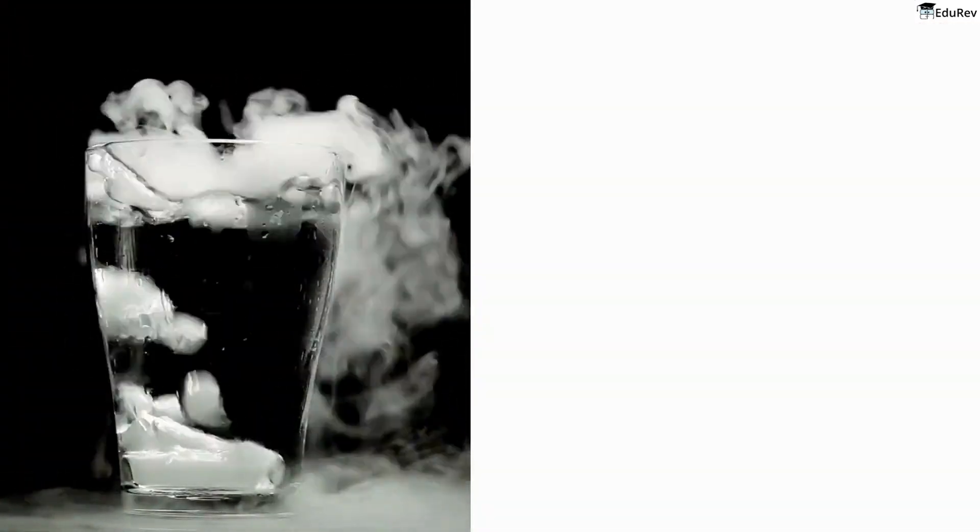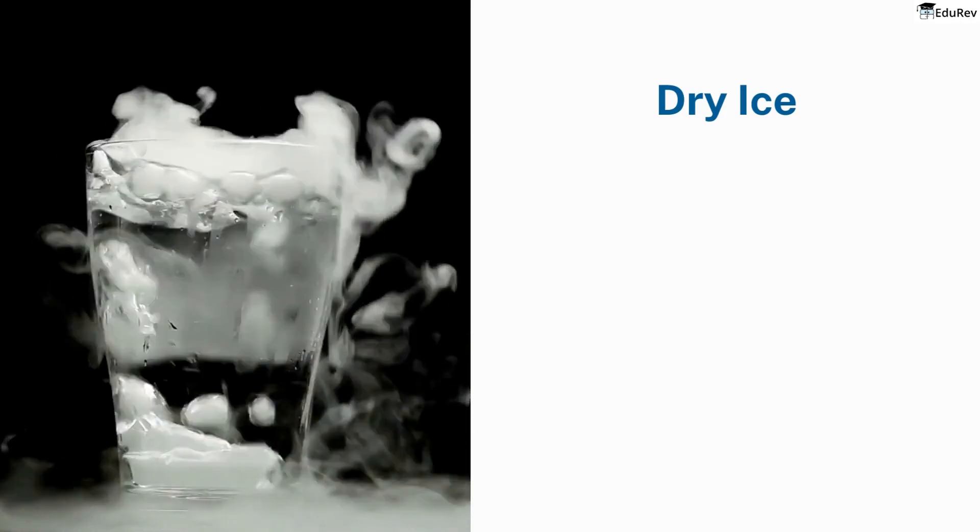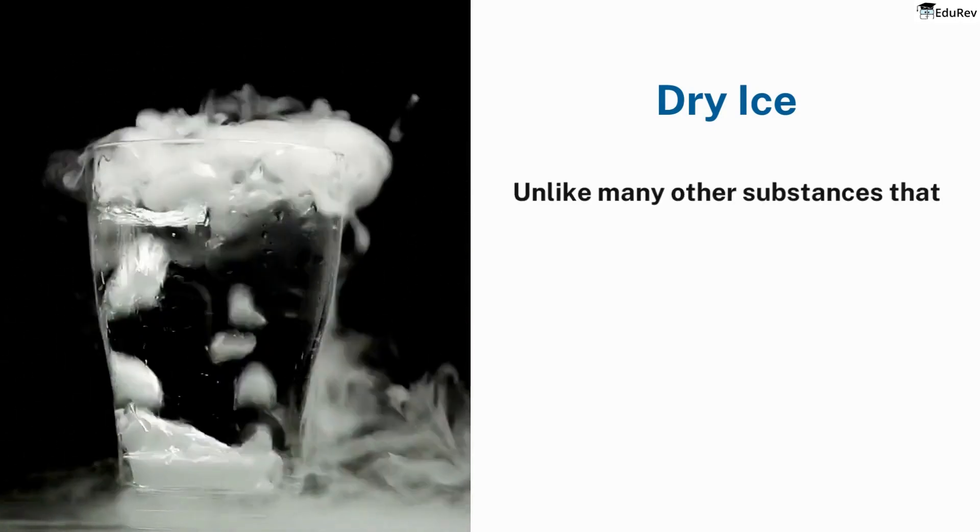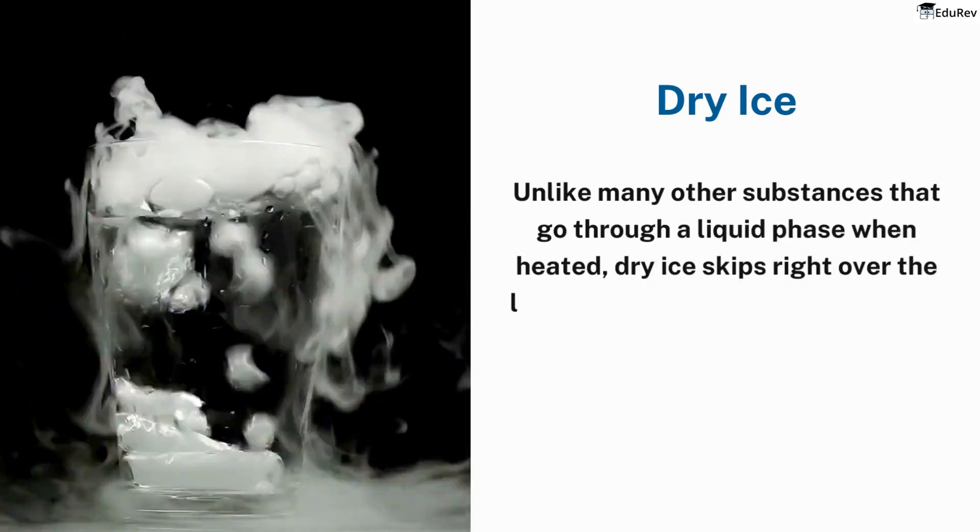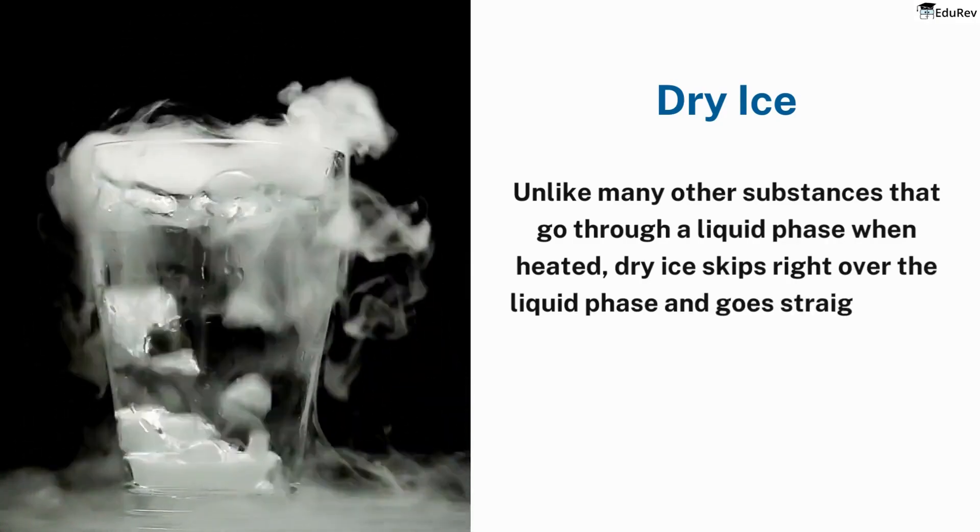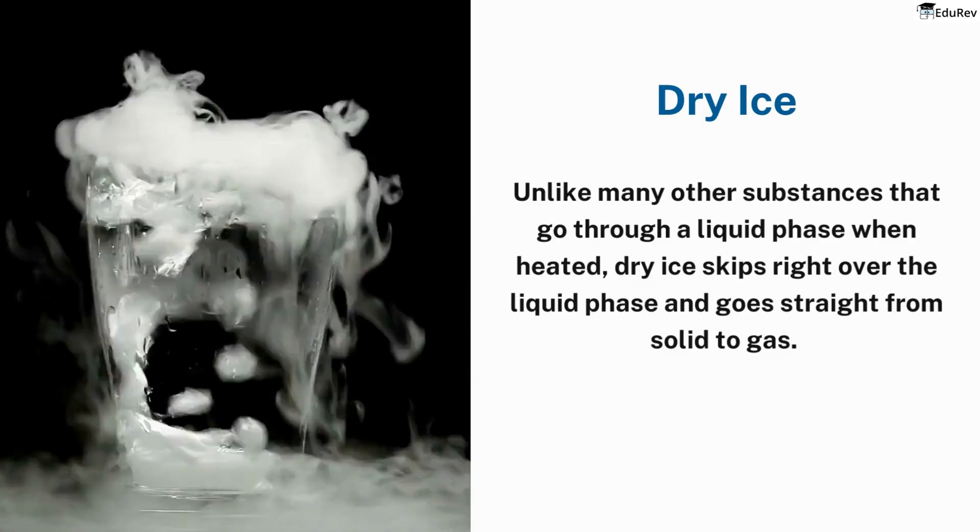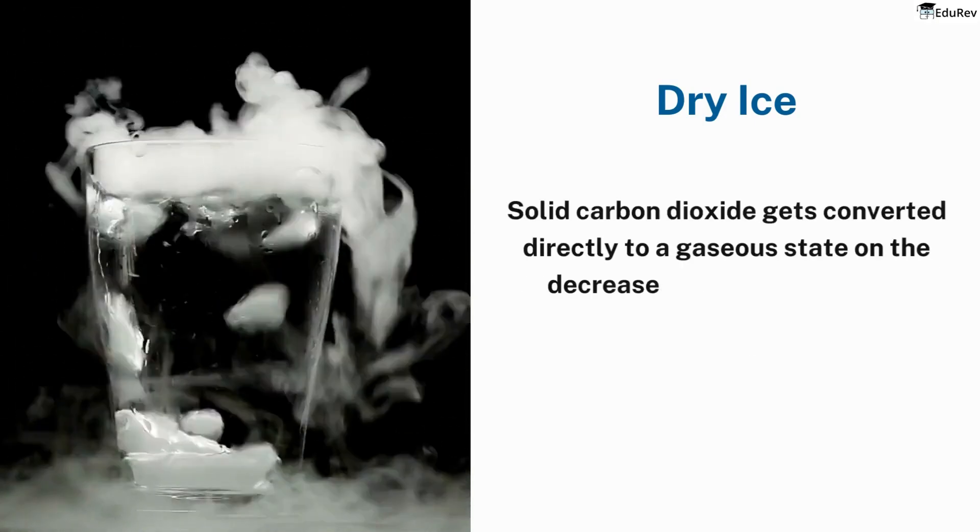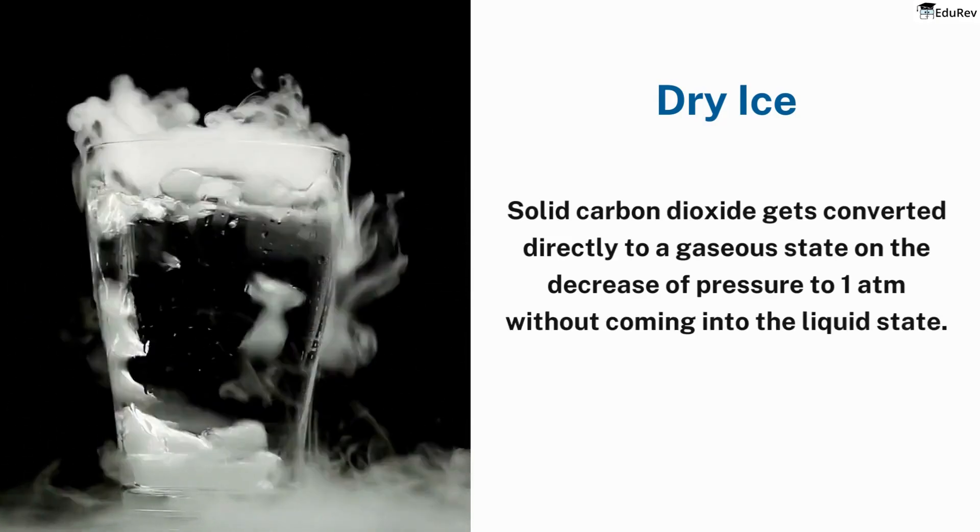You may have heard of dry ice before, but did you know that it's actually solid carbon dioxide? Unlike many other substances that go through a liquid phase when heated, dry ice skips right over the liquid phase and goes straight from solid to gas. That's right, it sublimates. Solid carbon dioxide gets converted directly to a gaseous state on the decrease of pressure to 1 atmospheric pressure without coming into the liquid state.